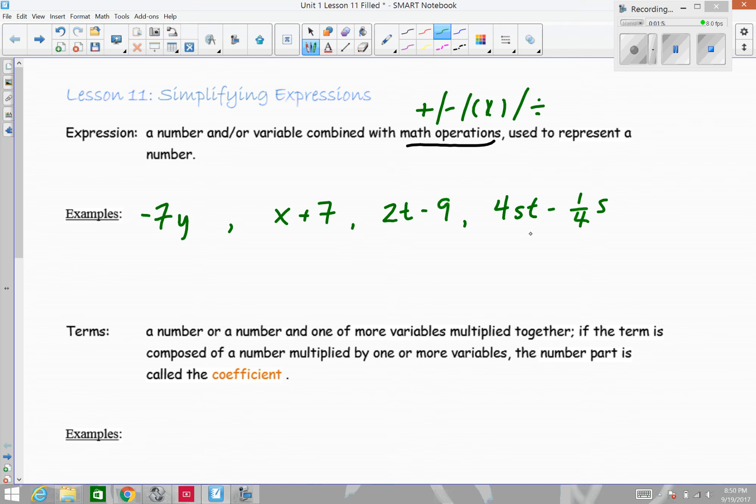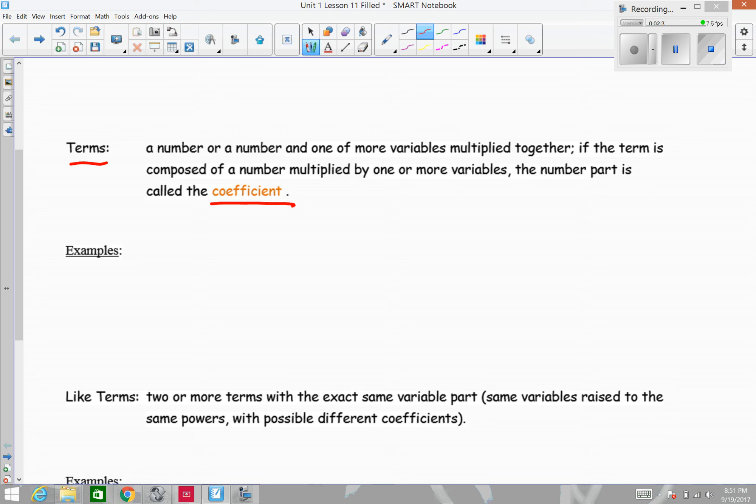When we talk about terms, we're talking about a number or a number and one or more variables multiplied together. If the term is composed of a number multiplied by one or more variables, that number part is called the coefficient. And that number part, or that coefficient, is what we use if we are combining like terms.